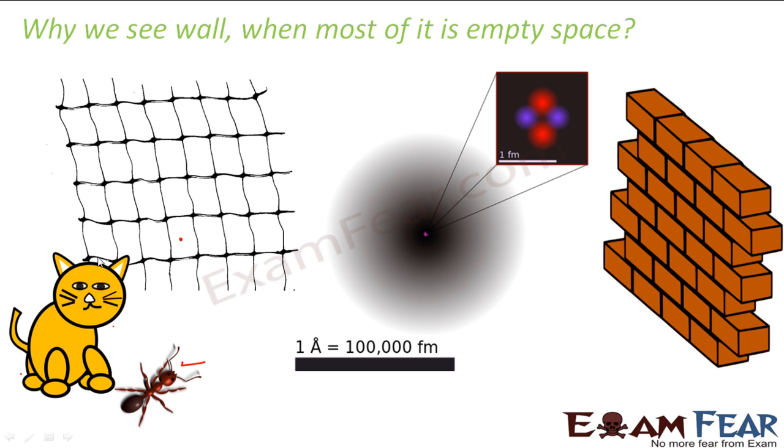So the same netted wire, when viewed by an extremely small insect, he would see it as an open space. For him, there is no netted wire. When the insect reaches this point, he could see all around itself open space. But when this cat sees it, for him, it is a netted wire and the cat cannot pass through it.